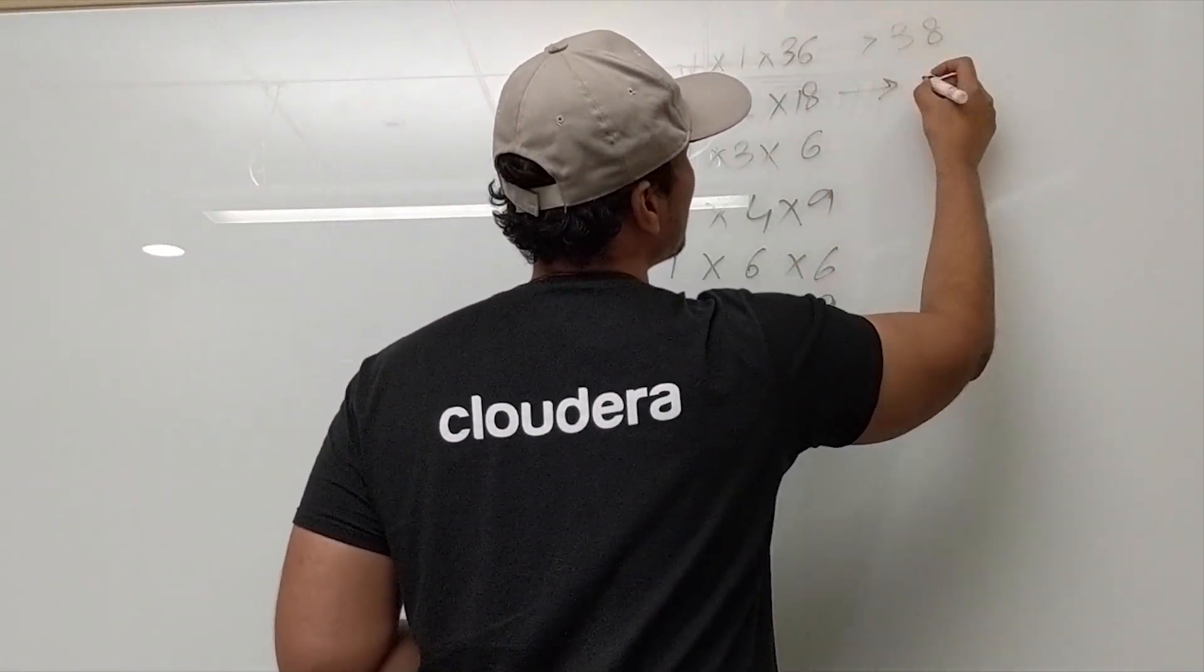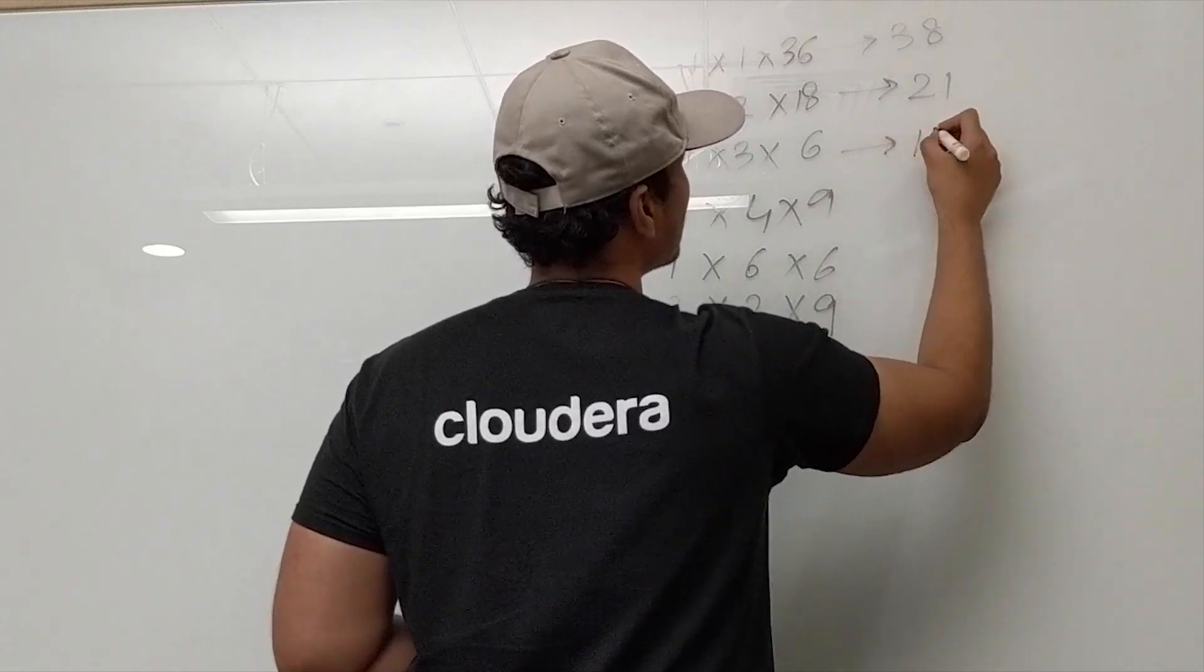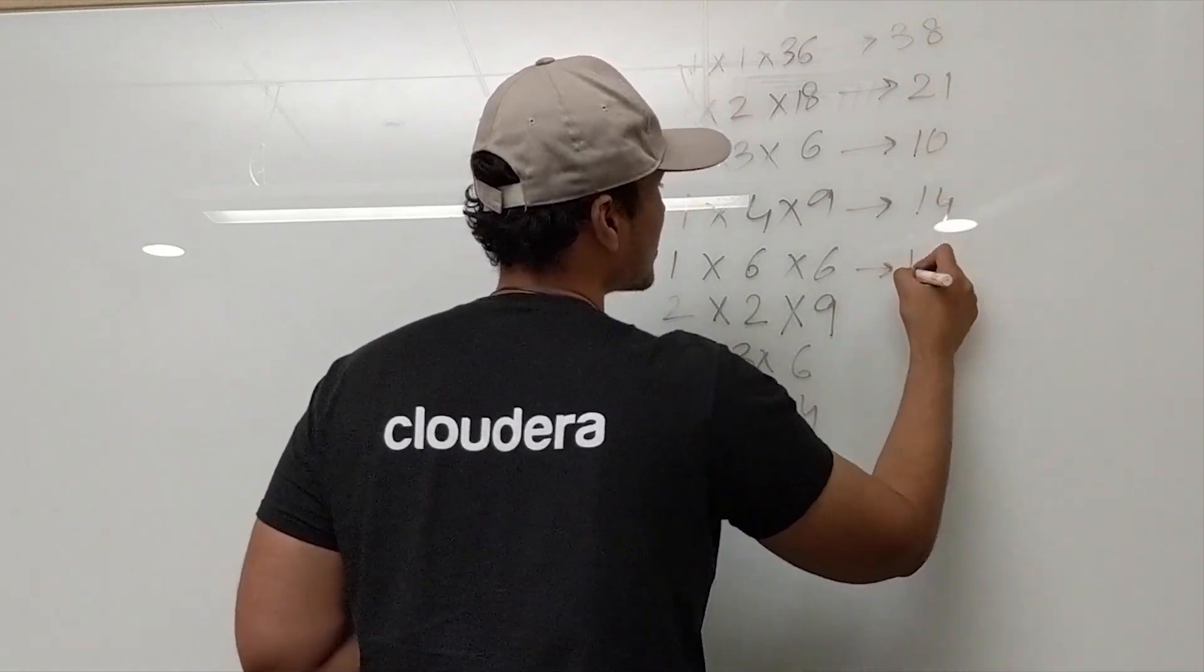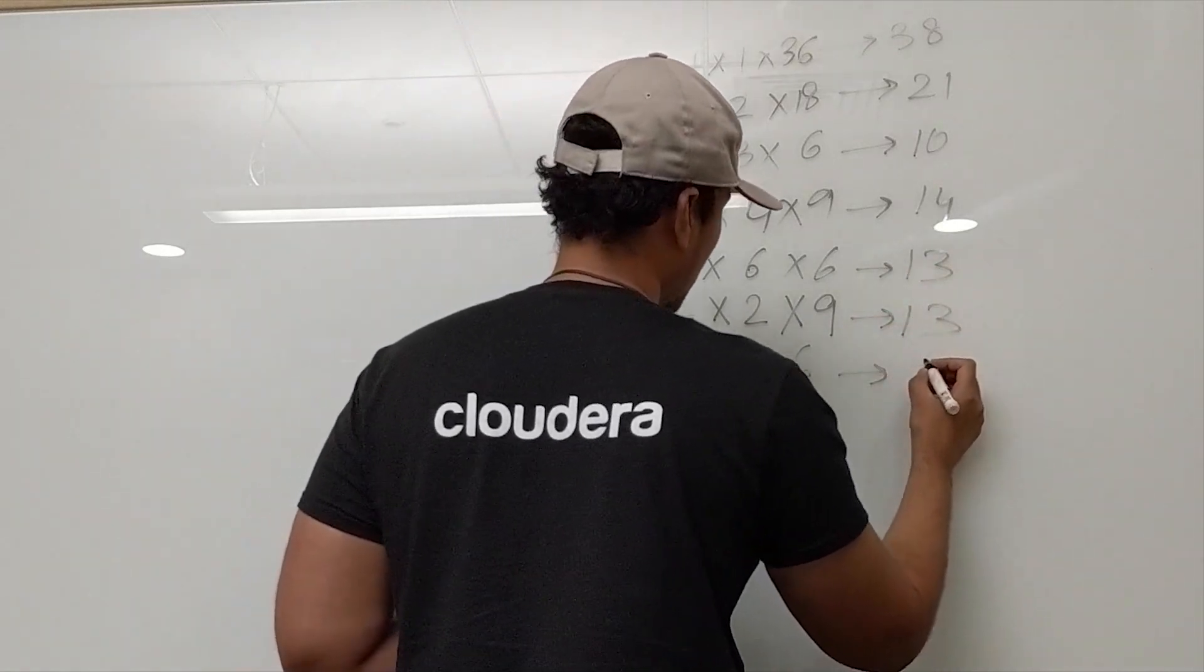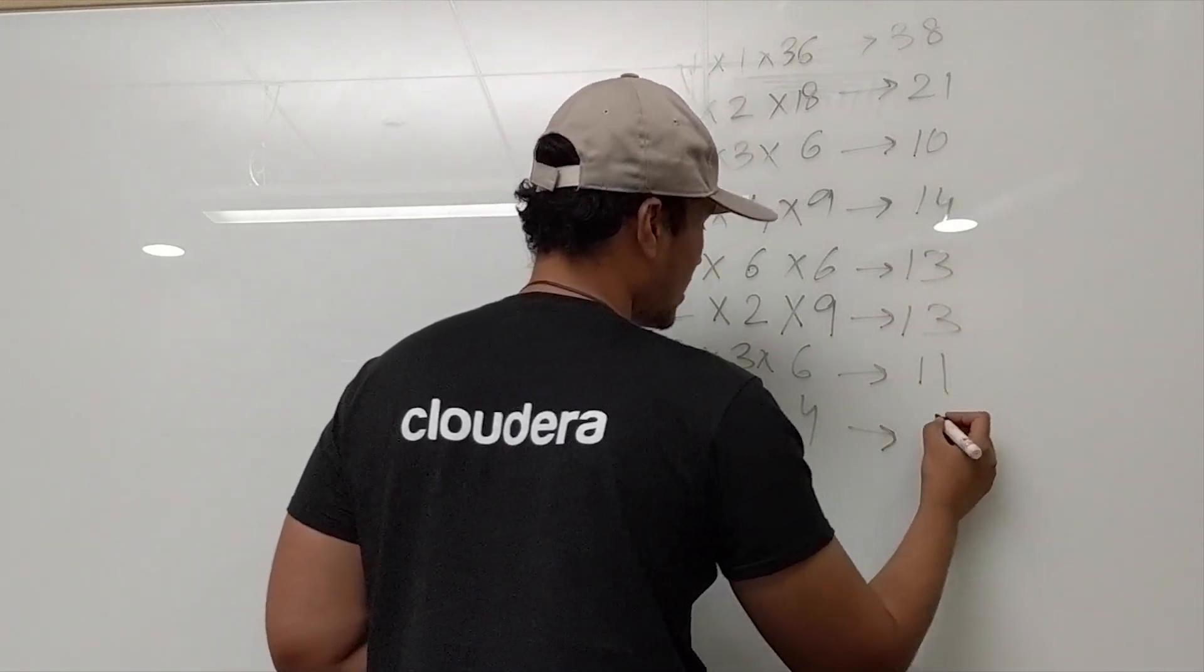So this has a sum of 38. This has 21. This has 10. This has 14. This has 13. This again has 13. This has 11. And this has 10.